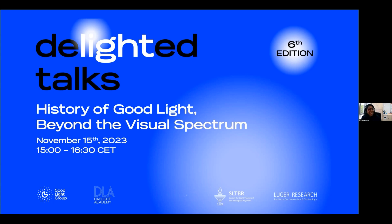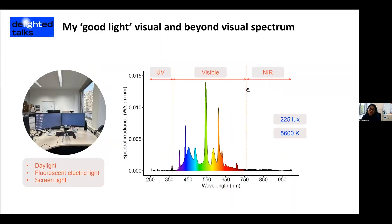In the spirit of the history of good light and beyond the visual spectrum, I'm reaching you from Berlin today. My good light looks like a cloudy sky outside. I'm coming to you from Berlin, it's 3 pm, late afternoon, it's wintertime. I have a cloudy sky outside and I'm looking at two of my screens here in my office space with some electrical lighting on top.